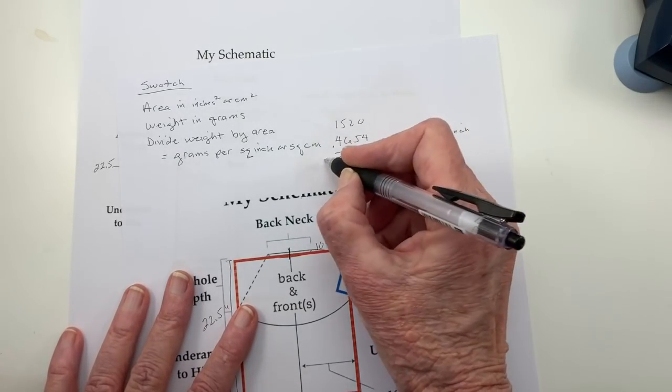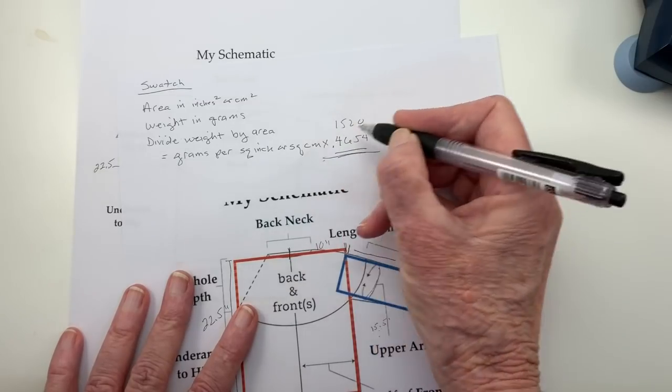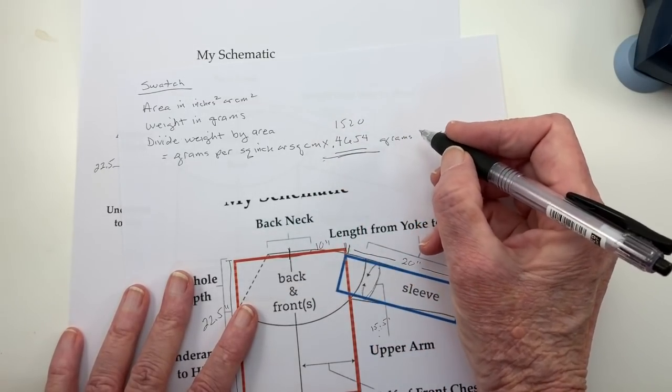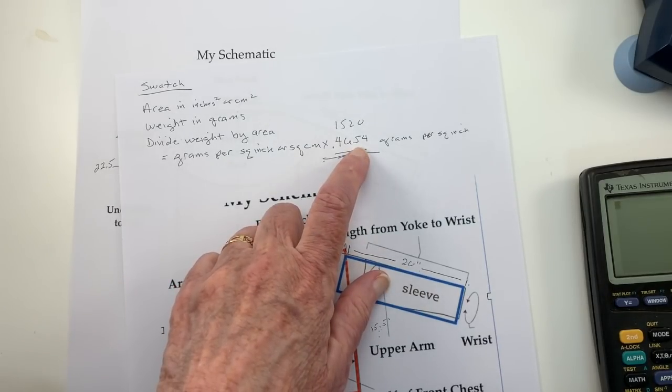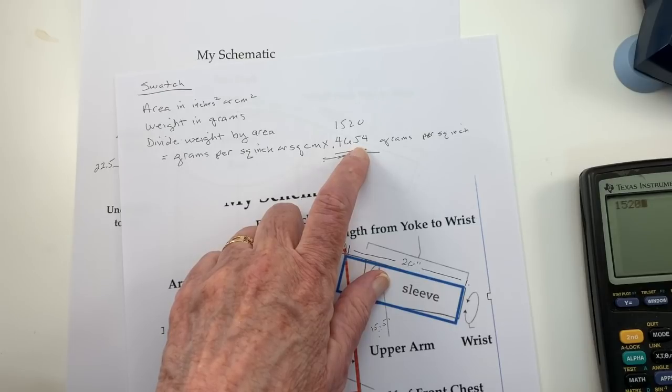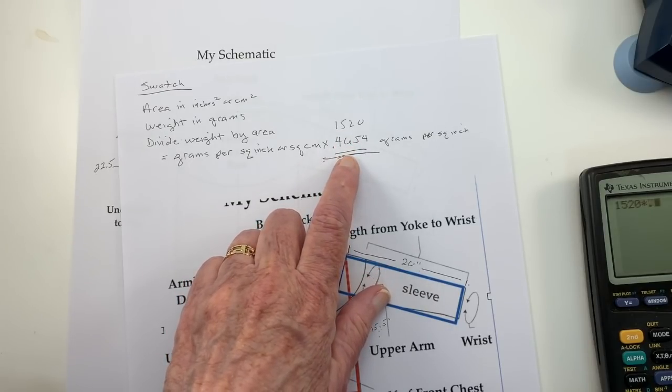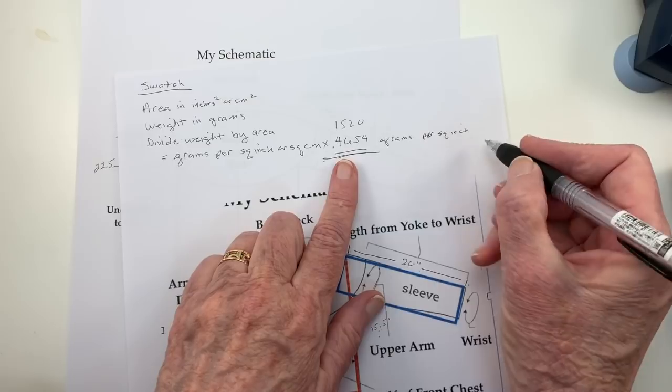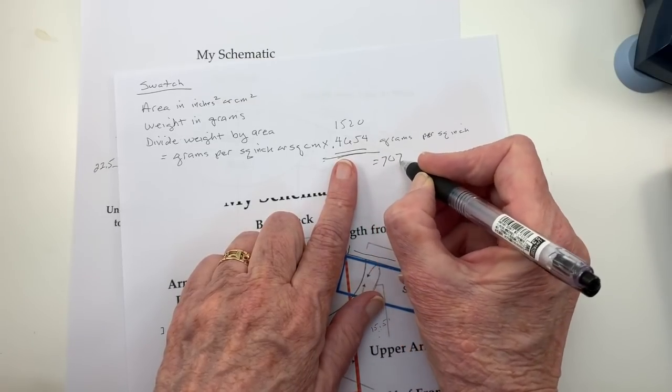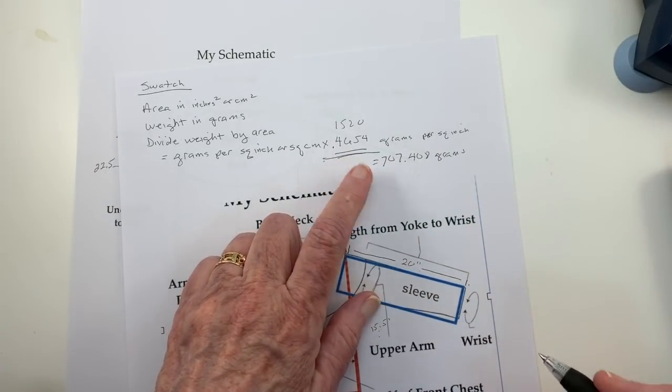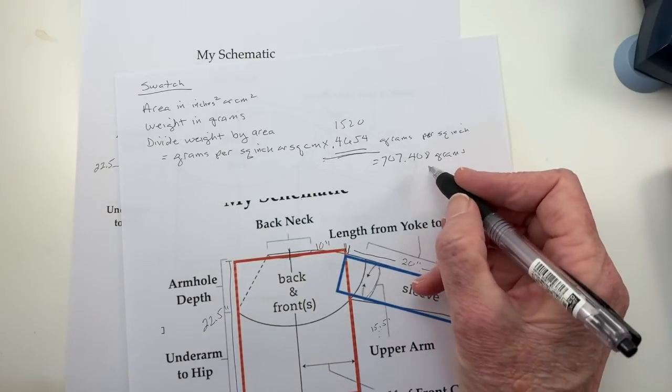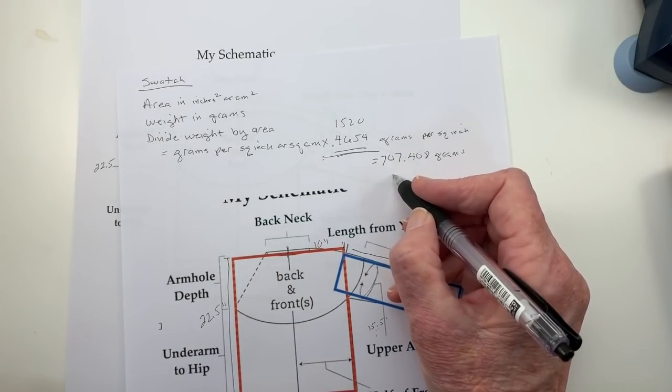That is my target number for square inches. I take that number up here to the grams per square inch, 1520 times 0.4654 equals, I'm going to use my calculator here now. So we're going to have 1520 times 0.4654 equals 707.408 grams. And that's what I need, because now I know if I'm buying 100 gram skeins, I need at least seven, possibly eight.